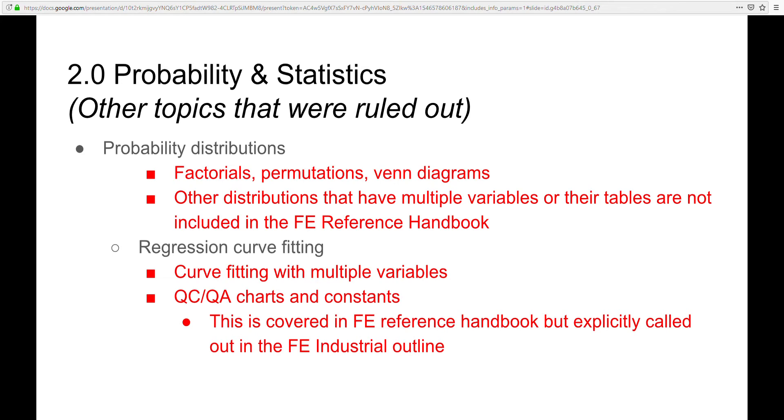These are some other topics that we ruled out in red. So probability also includes factorials, permutations, Venn diagrams. However, this doesn't focus on the probability distribution topic, it only focuses on probability. Other distributions, there are a lot more, but they aren't covered in the reference handbook. And these distributions typically have multiple variables, whereas the ones in the reference handbook only have a single variable.